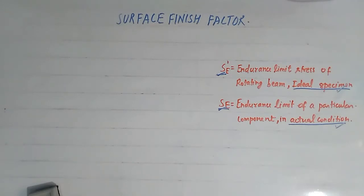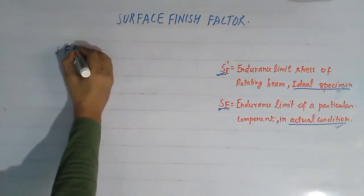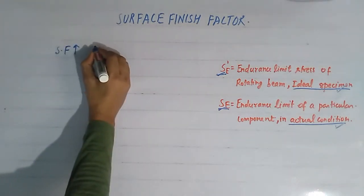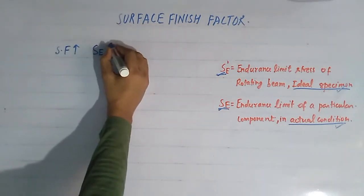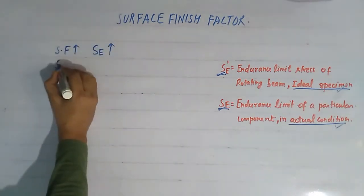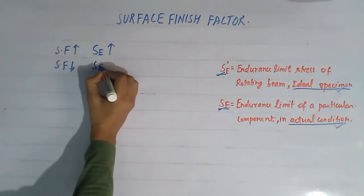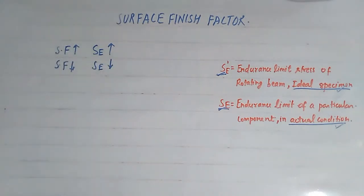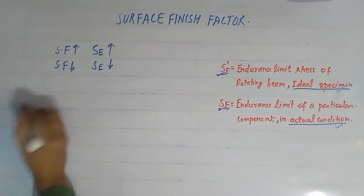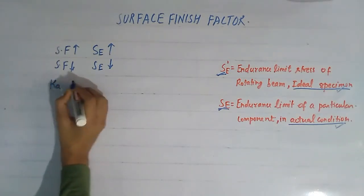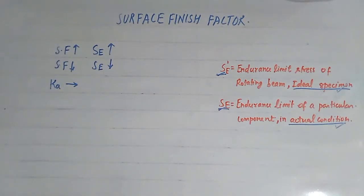We are going to discuss the effect of the surface finish factor on the endurance limit of the specimen. As I have already explained in the previous video, when the surface finish tends to increase, the endurance limit tends to increase, and when the surface finish tends to decrease, the endurance limit tends to decrease. Surface finish plays an important role in determining the endurance limit, so we consider a factor denoted by Ka, which gives us an idea about the surface finish factor.